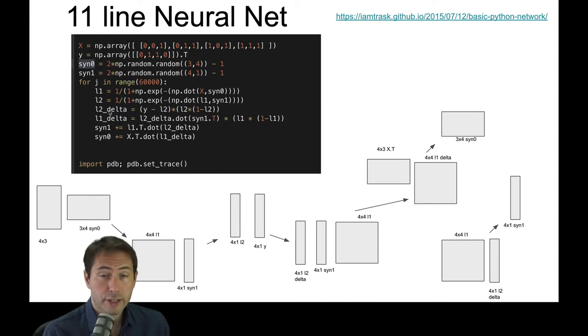That is the slope, the angle, the direction of our error, the direction that we should be going for delta two and delta one. Then we'll recompute the synapses for layer one and layer zero. And then we'll keep reiterating that process over and over again.